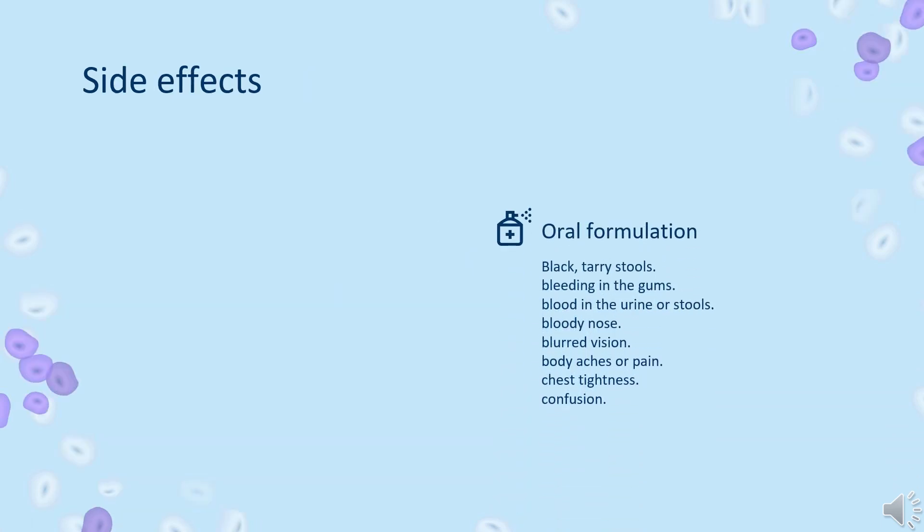Side effects of the oral formulation include black or tarry stools, bleeding in the gums, blood in the urine or stools, bloody nose, blurred vision, body aches or pain, chest tightness, and confusion.